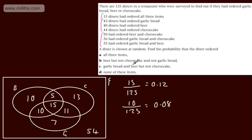Then garlic bread and beer but not cheesecake. Garlic bread and beer but not cheesecake is this one right here. So again, that's going to be 10 over 125, which is 0.08.